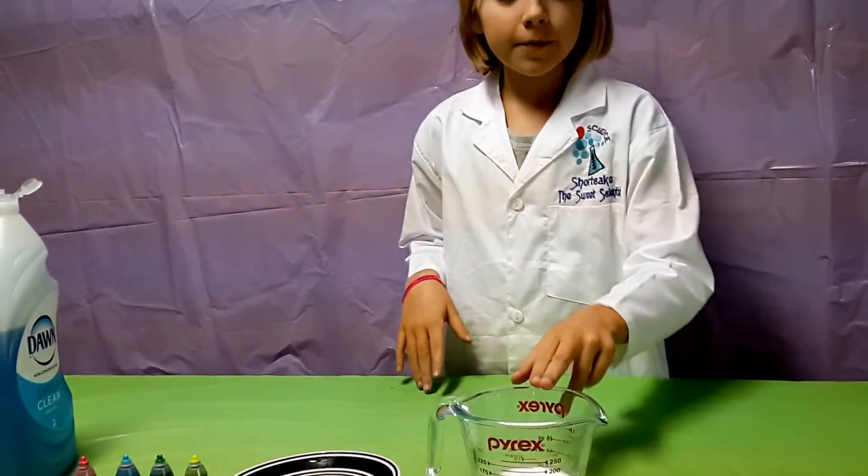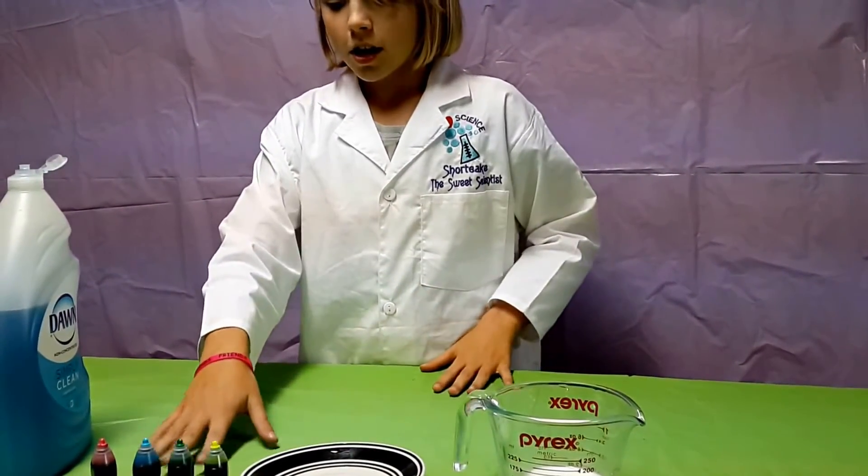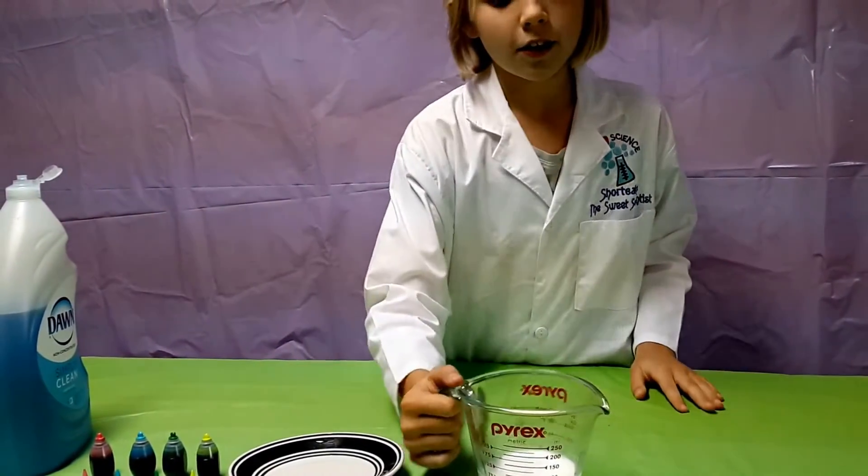A Q-tip, some milk, a saucer or a small bowl, four different colors of food coloring, and dish soap. And here's what you're going to do.